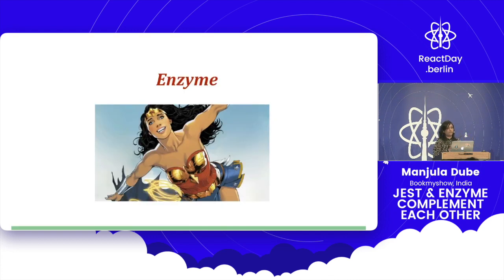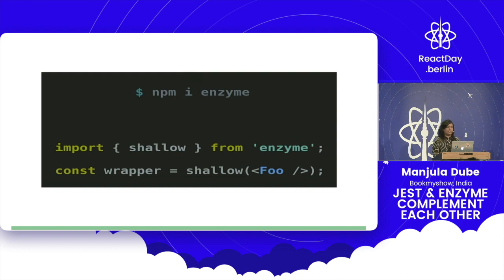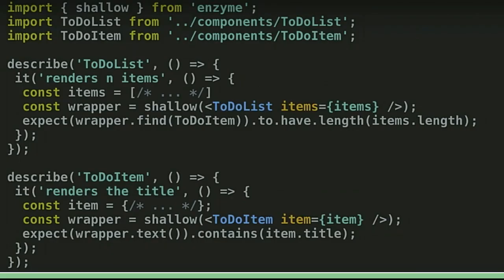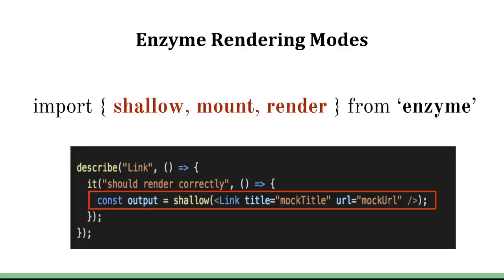In order to fix this, we used the Wonder Woman — that was Enzyme. Enzyme was a perfect solution for us, because it imported a shallow function wherein we could pass the component, and it worked for us. If we need to target a specific element, that works in a very easy way. This had fewer lines of implementation. In addition to shallow, there were other functions like mount and render. Mount works for full DOM rendering, and render works for your HTML rendering.